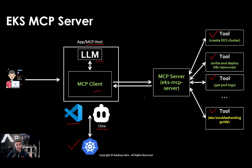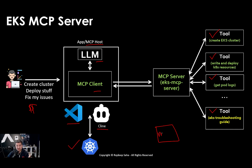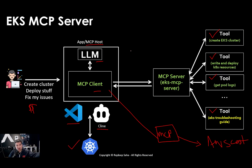Another thing to keep in mind — this is the beauty of MCP. Let's say you are using the agentic chat to create a cluster, deploy your stuff, and fix issues. But if you then ask, 'What is the price of Amazon DynamoDB?' — you can have another MCP server for AWS cost, which is another official AWS MCP server, and just plug it in to the same MCP host. It's plug and play, and you don't have to switch your context — that's where the name 'Model Context Protocol' comes from. You can plug and play different MCP servers, making it even more powerful.